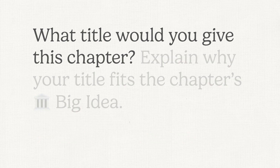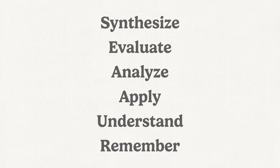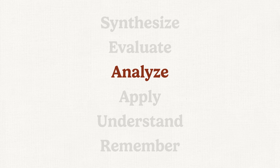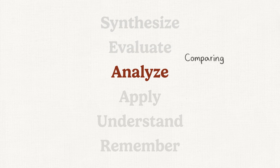Picking a title for a chapter is a way of summarizing the chapter, and summarizing is down in the lower half of Bloom's — understand or apply. But my goal is always to get to analyze. Analyze is the gateway to the higher levels of Bloom's. When students analyze, they're comparing, contrasting, and categorizing. So we have to have at least two ideas in order to analyze.